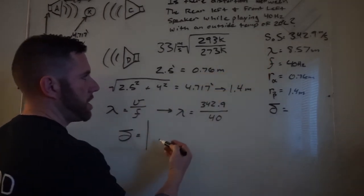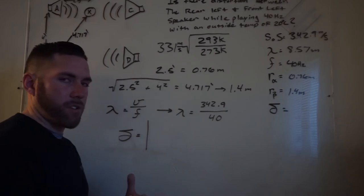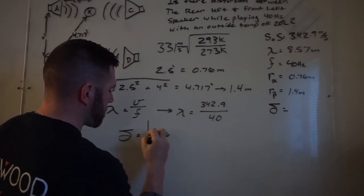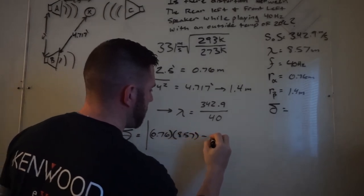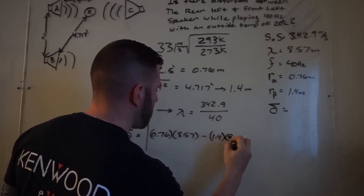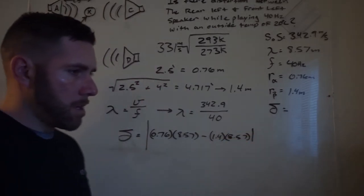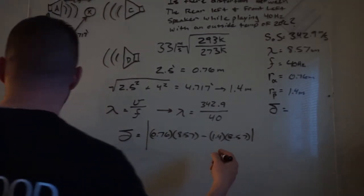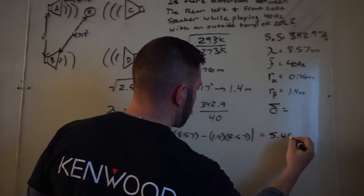It doesn't matter if you do RA first or RB first. Either way, it's just looking for a gap between the two. So we'll do 0.76 times 8.57 minus 1.4 times 8.57 in absolute bars. So we get our calculator, and what we end up getting here is 5.484.